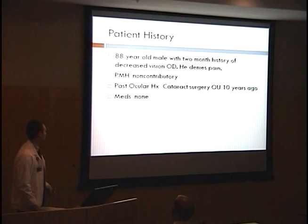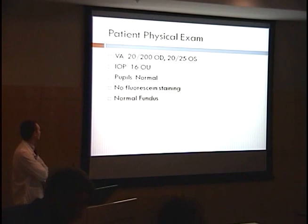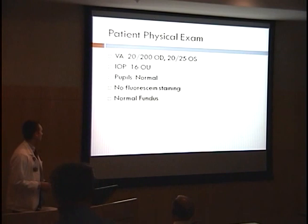On physical exam, initially two weeks ago here, his visual acuity was 20/200 in the right eye and 20/25 in the left eye. Intraocular pressure was 16, his pupils were normal. There was no fluorescein staining seen, and he had a normal fundus.